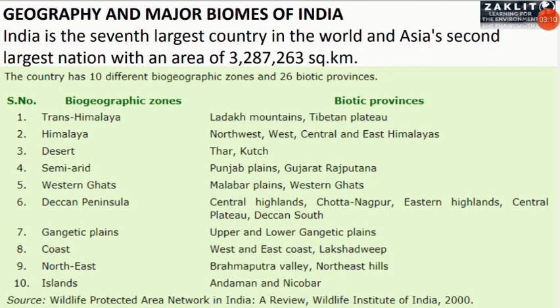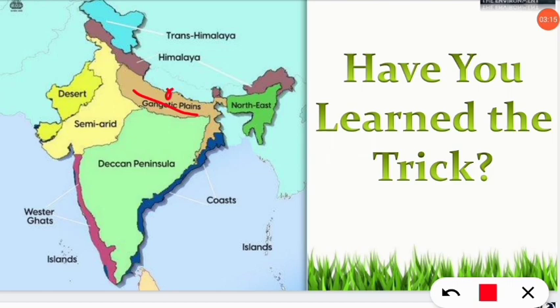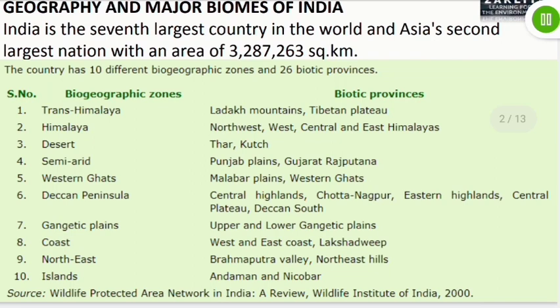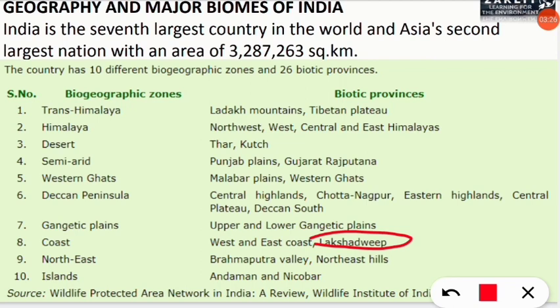The Gangetic Plains is divided into upper and lower Gangetic Plains — the northern part is the upper one, and the lower is the southern Gangetic Plains. The coastal region includes the west and east coast along with Lakshadweep. Importantly, Lakshadweep is not under islands — it comes under the coastal region. The northeast region covers the Brahmaputra Valley, northeast hills, and the seven sisters.